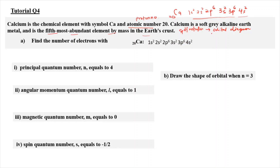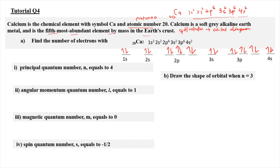Convert the SPDF notation into an orbital diagram so you can see clearly. Fill in 1s², 2s², 2p⁶ — fill single first, then pair. Then 3s², 3p⁶, and 4s², giving 20 electrons in total. For question number 1, we need the number of electrons with principal quantum number n equal to 4. The electrons at energy level 4 are in 4s, which holds 2 electrons. So the answer is 2 electrons.